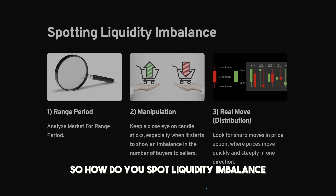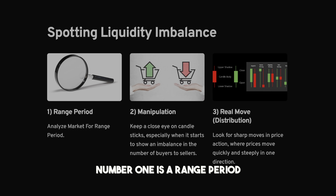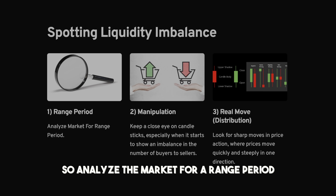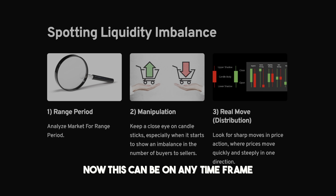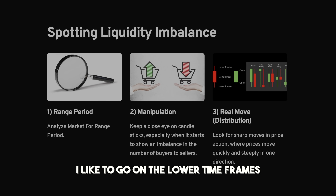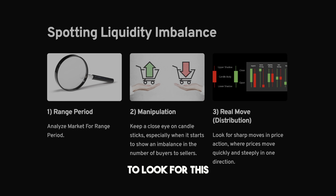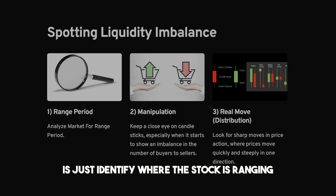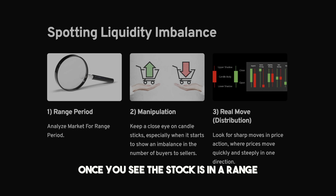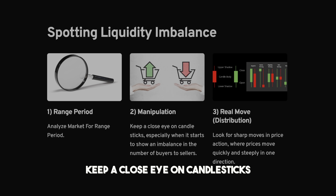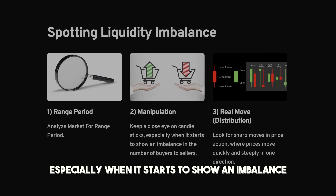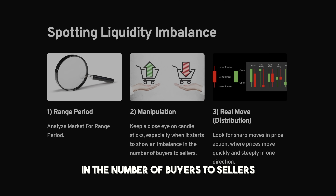So how do you spot liquidity imbalance? There are three simple steps. Number one is a range period — analyze the market for a range period, stocks that are in between a specific range. This can be on any time frame, but since I'm a day trader I like to go on lower time frames to identify where the stock is ranging. Once you see the stock is in a range, the second step is manipulation — keep a close eye on candlesticks, especially when they start to show an imbalance in the number of buyers to sellers.